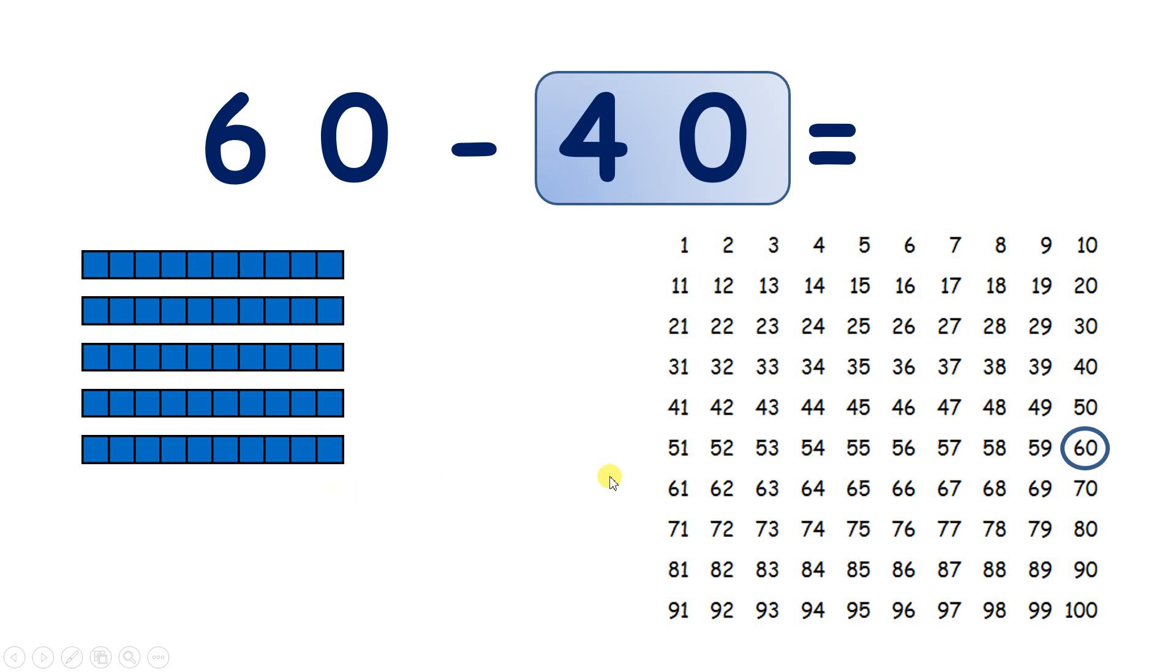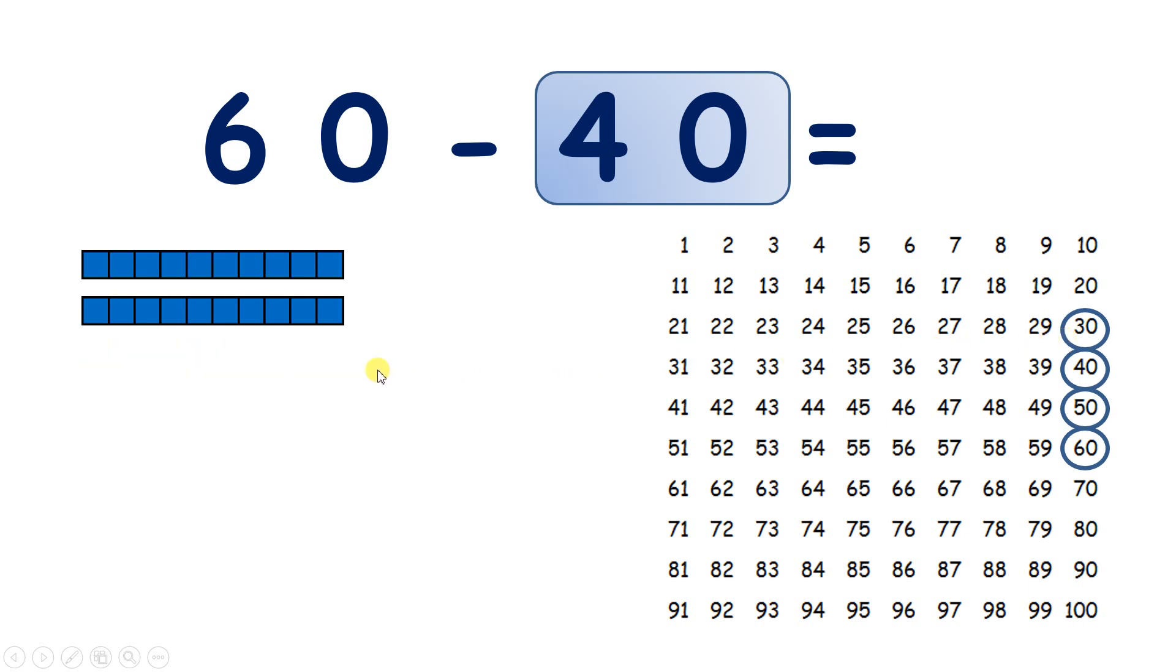We'll take away 10, and we have 50. Take away a second 10 from 60, and we have 40. Take away three tens, and we have 30. And take away four tens, and that leaves us with 20.